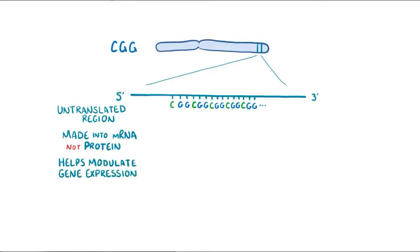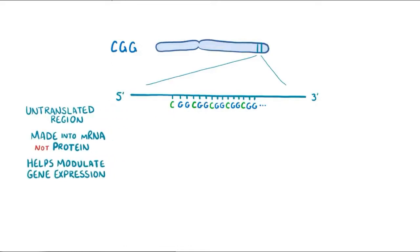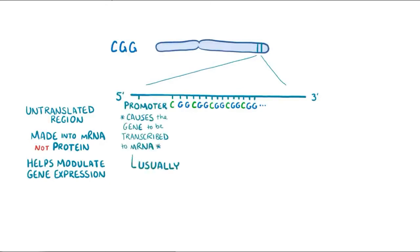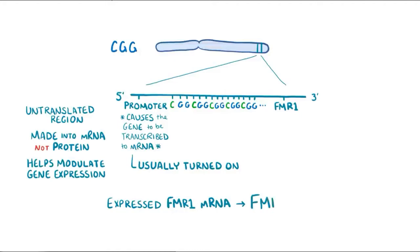Just upstream from the 5' untranslated region is FMR1's promoter, the region that causes the gene to be transcribed into mRNA, which is usually turned on. Expressed FMR1 mRNA gets translated into Fragile X Mental Retardation Protein, or FMRP, and it helps in development of the brain and other tissues.